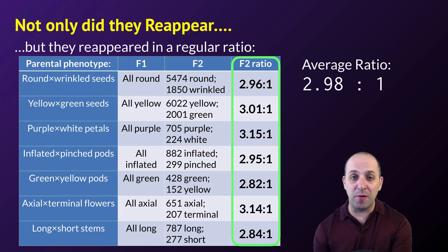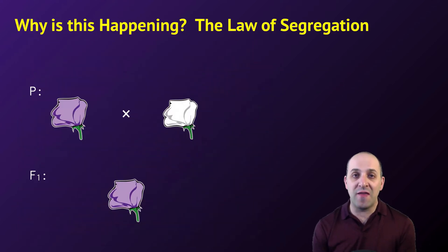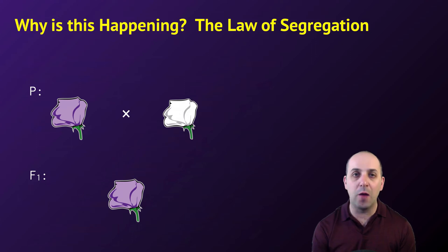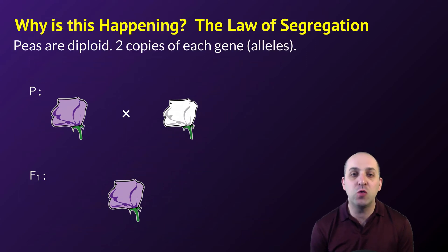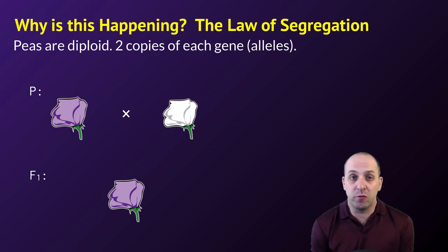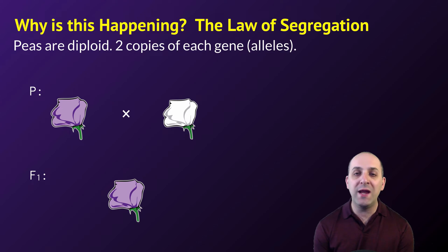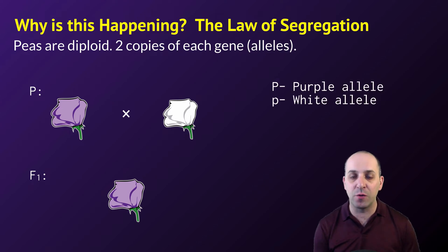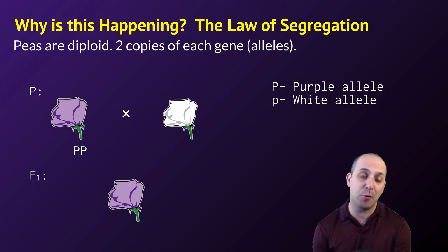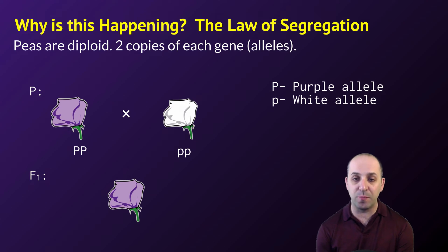So why is that happening? In order to understand that, Mendel came up with some laws. The first is the law of segregation. Peas have two copies of each gene — they're diploid and sexually reproducing. We call the different versions of each gene alleles. We're going to say that capital P is the purple allele, and lowercase p is the white allele. In the parental cross, since they're purebred, we've got a PP plant and a pp plant — that's what we cross.